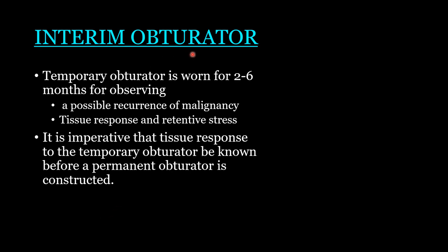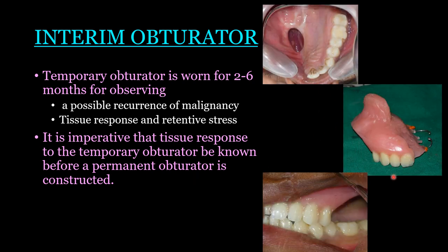The interim obturator replaces the surgical obturator once the initial healing is done. This temporary obturator is worn for two to six months, depending on the possible recurrence of malignancy — the patient will be under observation. Tissue response and retentive stress are also important factors observed before shifting to the permanent obturator. The interim obturator helps restore speech, deglutition, mastication, and aesthetics — acting as a psychological advantage to the patient. Placing teeth is controversial; it can be done depending on healing, or teeth can be avoided to allow satisfactory healing before shifting to the definitive obturator.